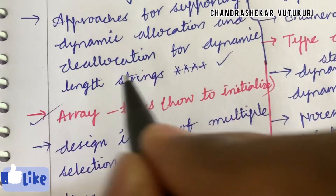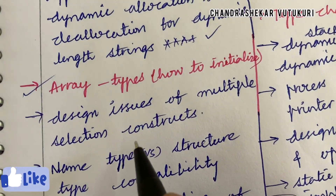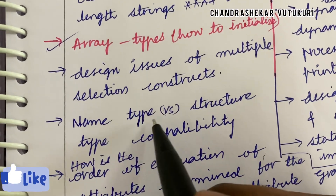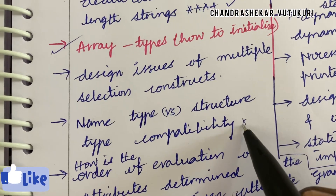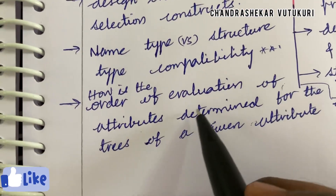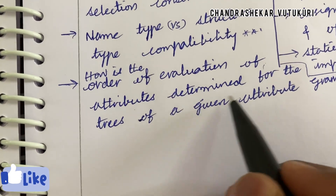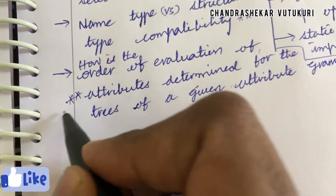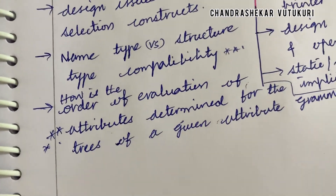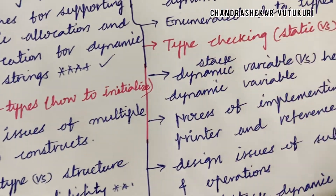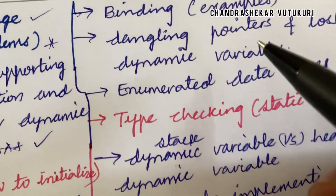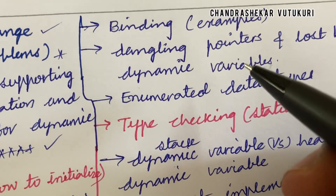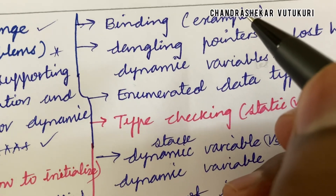Design issues of multiple selection constructs, and name type versus structure type compatibility and their differences. How is the order of evaluation of attributes determined for the trees of a given attribute grammar? Whoever has taken this elective subject, it is a bit difficult to score good marks and cover these topics — you are supposed to work out each and every parameter I am highlighting.